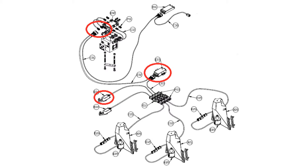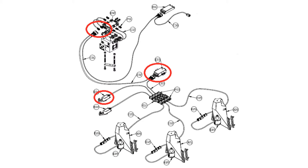If everything is communicating, proceed to add one roll or height sensor to the system. If any of the three modules are not communicating, remove the input module in the same manner described for the valve module. Proceed to add a height or roll sensor to the system. Continue this process until all faulty components have been identified.